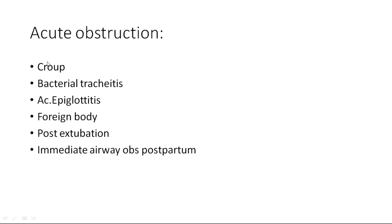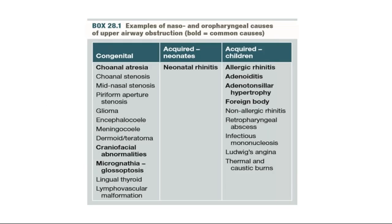Causes of acute obstruction: croup (also known as laryngotracheobronchitis), bacterial tracheitis, acute epiglottitis, foreign body, post-intubation, and immediate airway obstruction postpartum. Examples of nasopharyngeal or oropharyngeal causes of upper airway obstruction — congenital causes include choanal atresia, craniofacial anomalies, and micrognathia (also called glossoptosis). Acquired causes in neonates include neonatal rhinitis; in children, allergic rhinitis, adenoiditis, adenotonsillar hypertrophy, and foreign body. Also remember retropharyngeal abscess, Ludwig's angina, and dermal and caustic injuries.